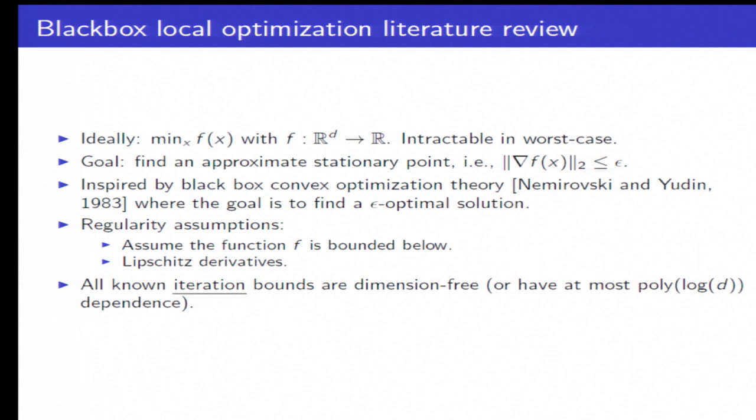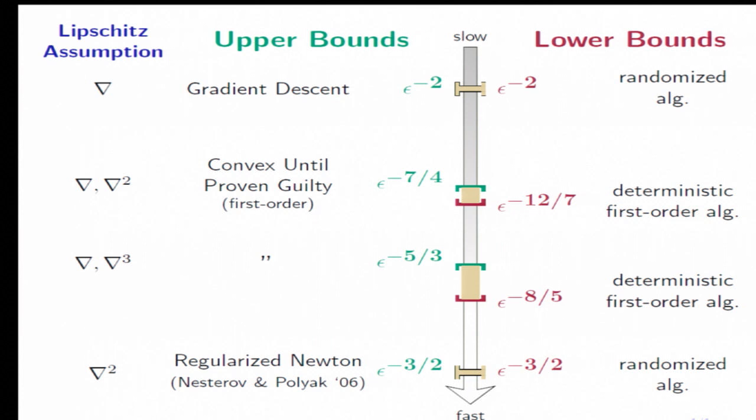And let's just have a quick look at what is known at the moment in this black-box local optimization literature. So you can look at the top for the most basic result. So that's the result for gradient descent. When you have a Lipschitz gradient, you get epsilon to the negative 2. On the other hand, if you have the ability to compute second derivatives, and your Hessian is Lipschitz, then you can get epsilon to the negative 3 over 2, as Nesterov and Polyak showed. And then there are in-between results, which show that you can get epsilon to the negative 7 over 4 when the first and second derivatives are Lipschitz, and epsilon to the negative 5 over 3 when the first and third derivatives are Lipschitz.